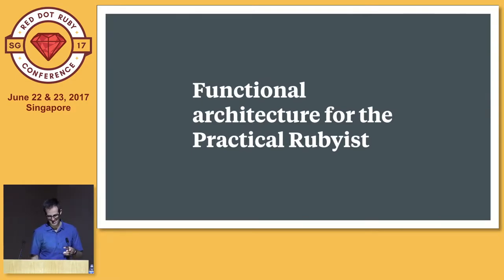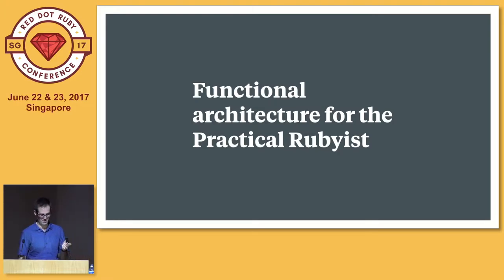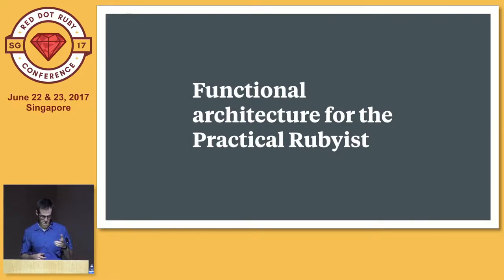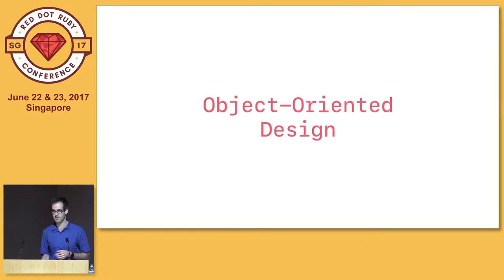Onto the technical things. I've got nothing to add to Matt's comments about VMs or JIT compilers, except to say that I'm glad he's taking care of it. I'm here today to talk about something a bit different — building applications with Ruby. I want to talk about a big shift in the way I've been writing Ruby apps. I want to talk about functional architecture. And I want to start our journey to functional architecture, strangely enough, with object-oriented design.